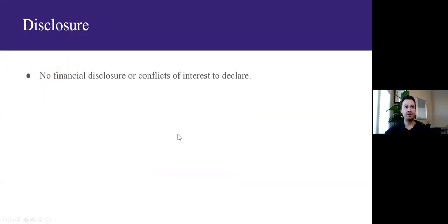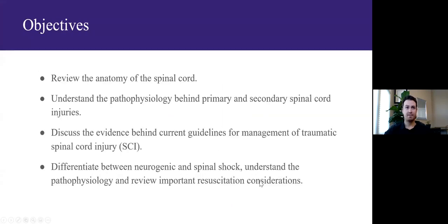I don't have any financial disclosures or conflicts of interest to declare. Today we'll briefly review the anatomy of the spine including the vertebral column and the spinal cord, then cover primary and secondary cord injuries. Using a case-based approach, we'll apply this information to spinal cord injury patient management. By the end of this talk, you should be able to distinguish between neurogenic and spinal shock and never use these terms interchangeably again.